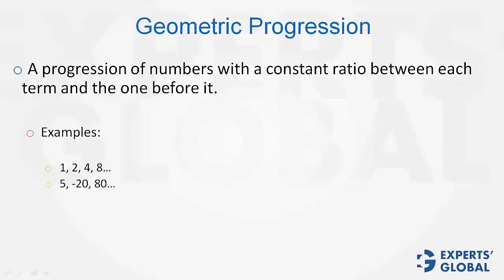Next, 5, negative 20, 80. The common factor is negative 4. Here, the common factor is negative 1 third. These are all geometric progressions.